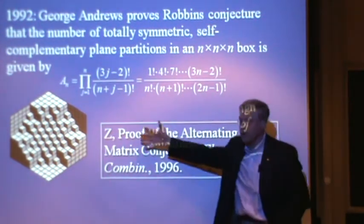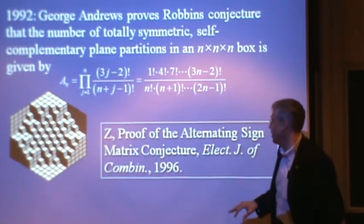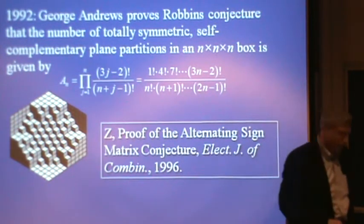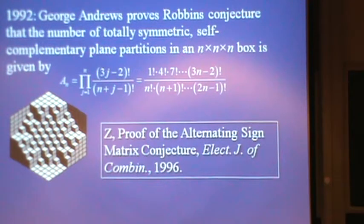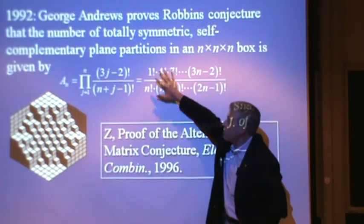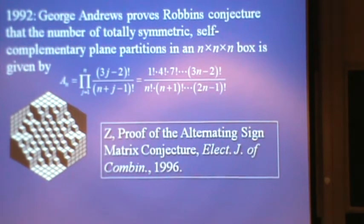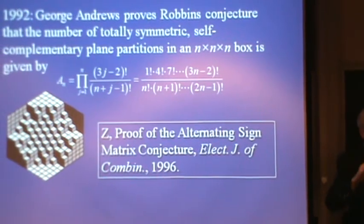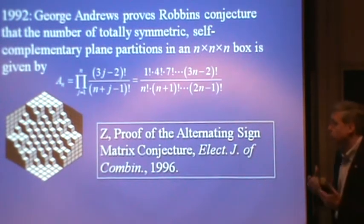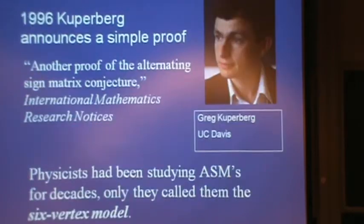Then Zeilberger picked that up and was able to build it into a proof of the alternating sign matrix conjecture. It finally appeared in 1996. It proved that this is the correct formula for counting the number of n-by-n alternating sign matrices, but it wasn't able to prove the initial conjecture, the ratios of consecutive terms in that triangle of values, what's known as the refined alternating sign matrix conjecture. But that conjecture fell fairly quickly after that.